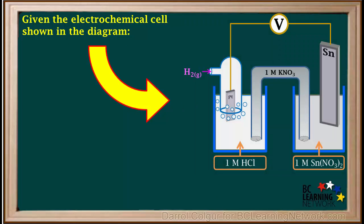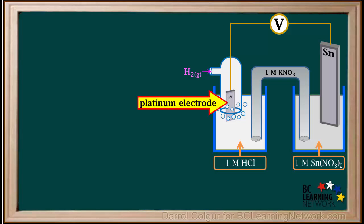We're given the diagram for an electrochemical cell. The left beaker has a platinum electrode, which is surrounded by hydrogen gas, and dipped into a solution of 1 molar hydrochloric acid.